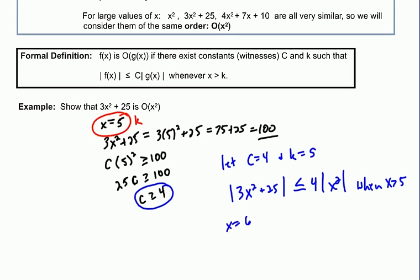3x²+25 will end up equaling 133, and 4x² will equal 144, and this will continue to be the case. 4x², once you get past x equals 5, will always be bigger than 3x²+25. So you found constants c equals 4 and k equals 5 here that make sure that this x² function is always greater than 3x²+25 when you multiply it by 4 and go past x equals 5.